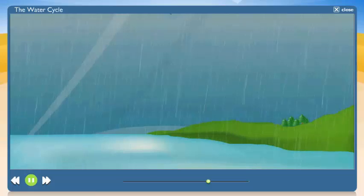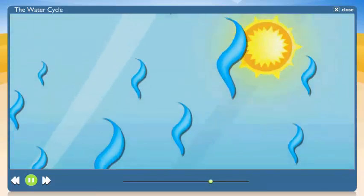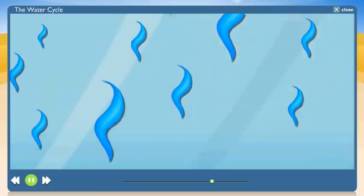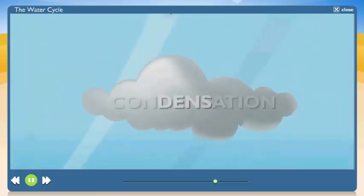Remember, what comes down must go up. The water vapor gas rises in the air. As it does, it cools down. That makes the gas turn back into droplets of water, and they form clouds. It's called condensation.